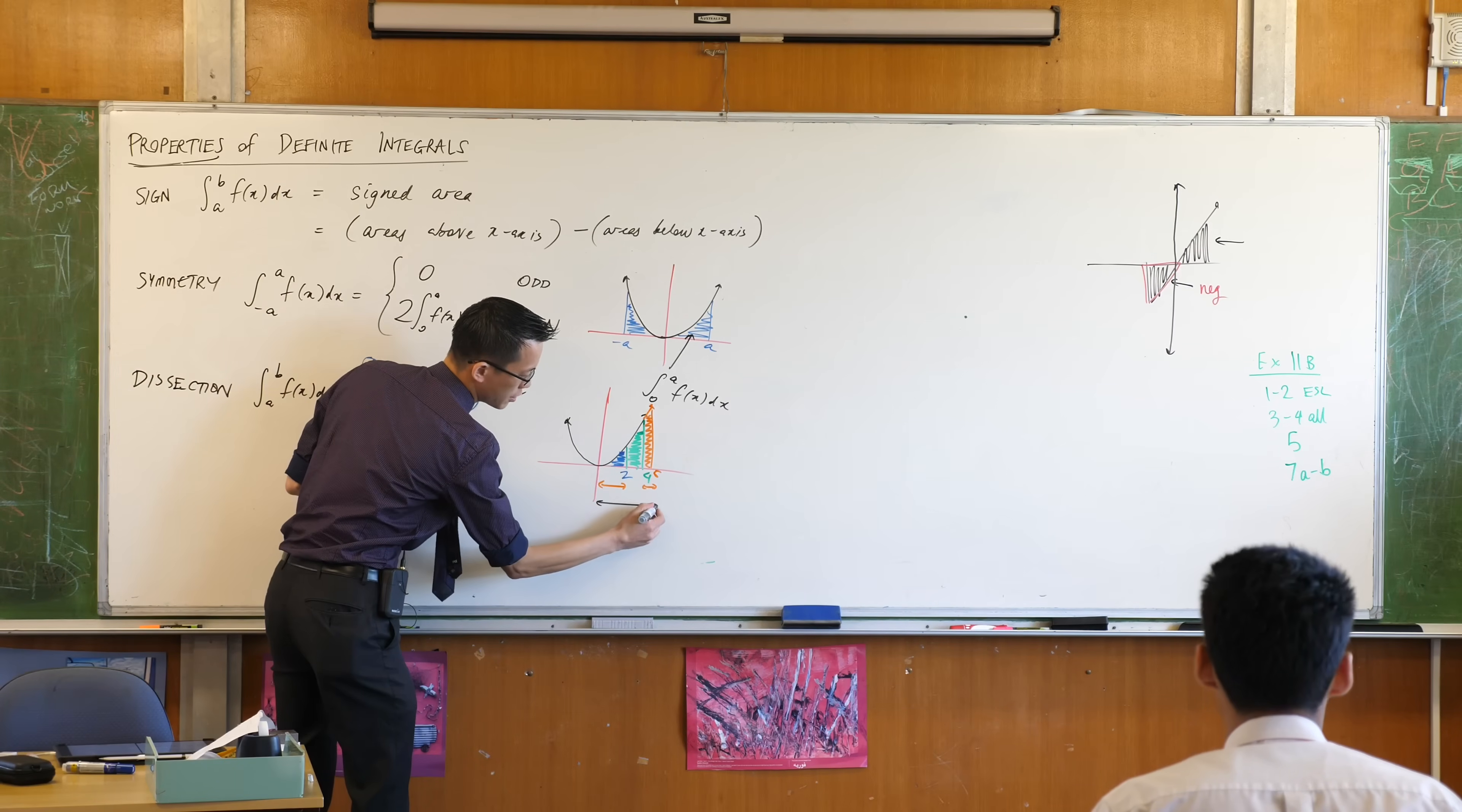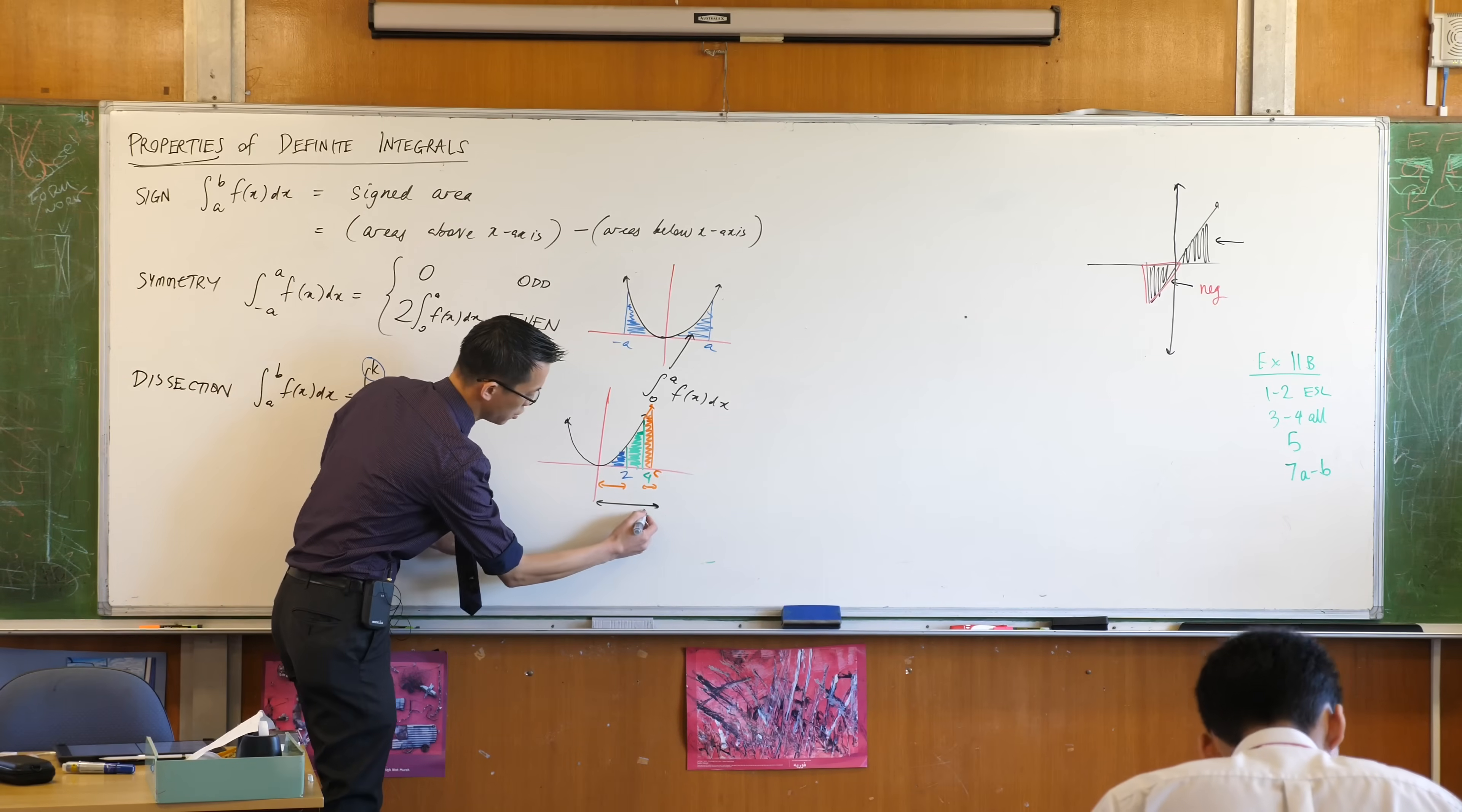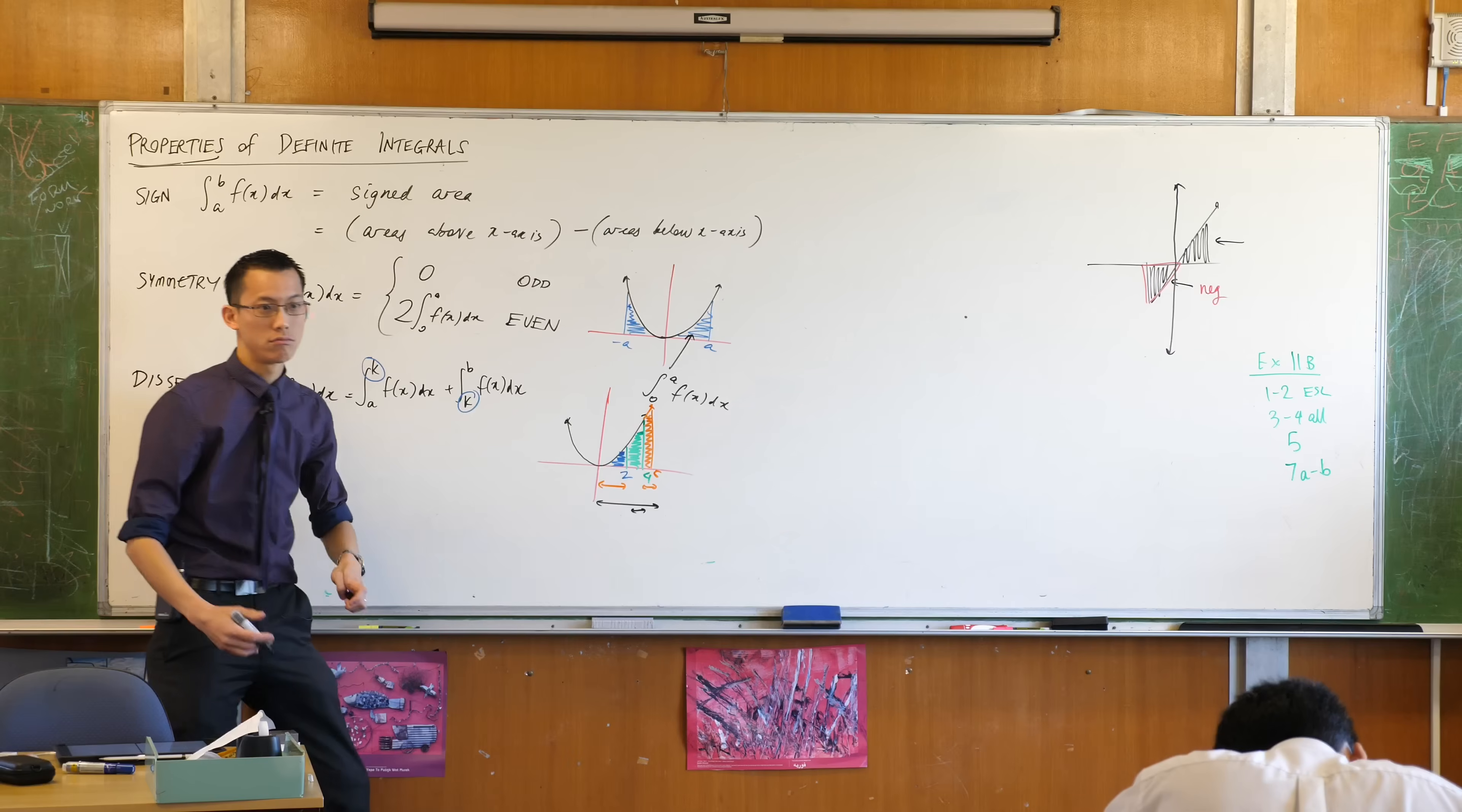What I could do if I wanted is work out zero to five and then take away the green piece, which is the part I don't want, just take away two to four. That would be fine.